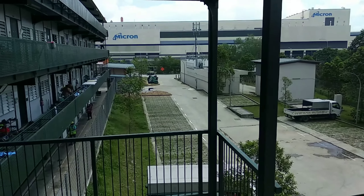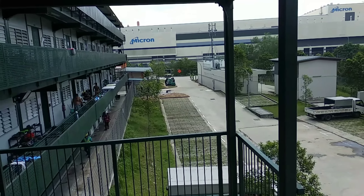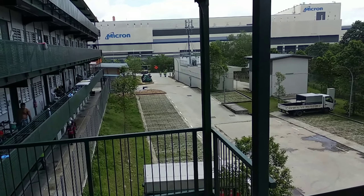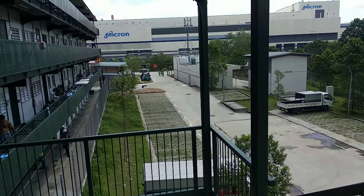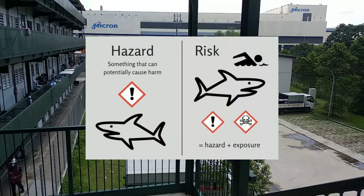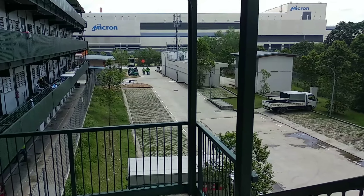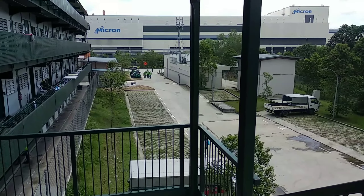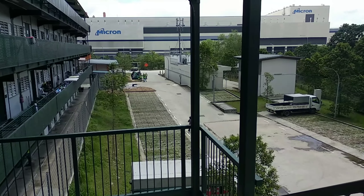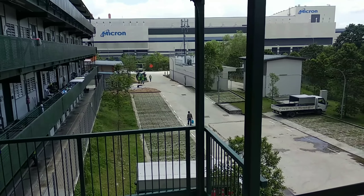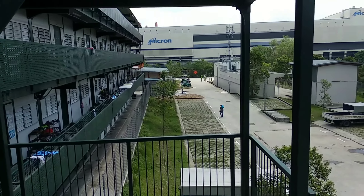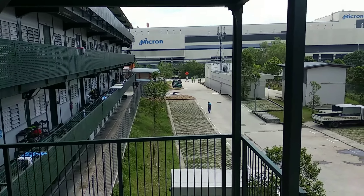Dust is also a hazard. So now I am going to explain to you risk. The possibility, or the likelihood, of a person getting harm or injured — that is risk. For example, the hazard is a knife, so the chance of a cut from a knife — that is the risk. That means probability and consequence.